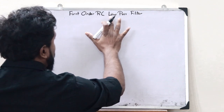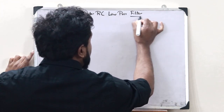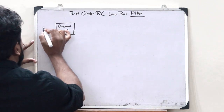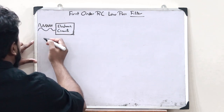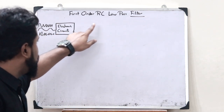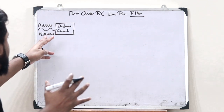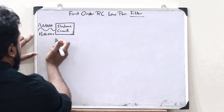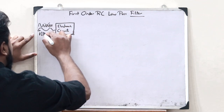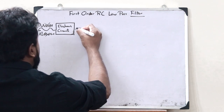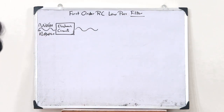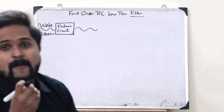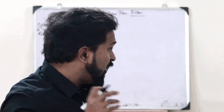Before we go into the term first-order RC low-pass filter, first we need to understand what you mean by the term a filter. A filter is basically an electronic circuit where when we give different types of signals with different frequencies, this filter circuit only allows signals with certain frequencies to pass through it. All the other signals are not passed through — at the output, we only get the allowed signal. It is simply an electronic circuit that passes only some frequency components and rejects all others.